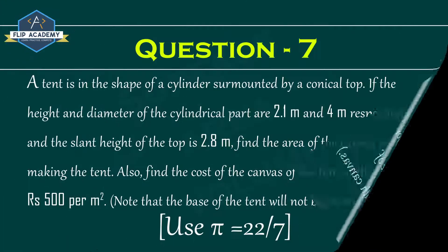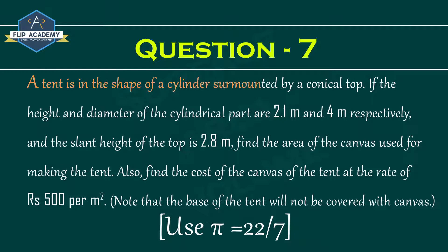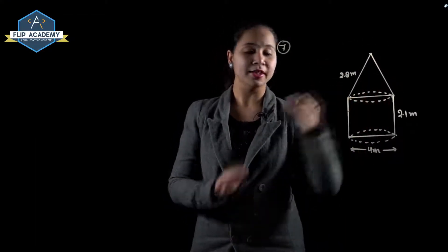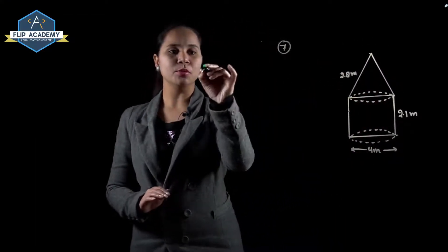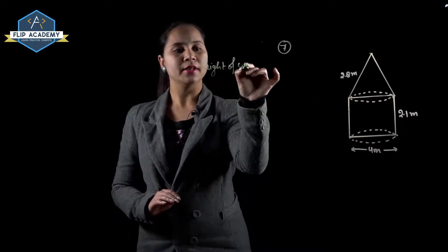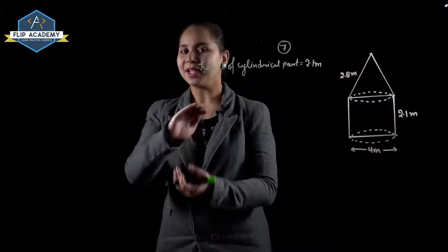Question number 7: A tent is in the shape of a cylinder surmounted by a conical top. If the height and diameter of the cylindrical part are 2.1 meters and 4 meters respectively, and the slant height of the top is 2.8 meters, find the area of canvas used. The conical portion is on top and cylindrical portion below. Height of cylindrical part equals 2.1 meters.